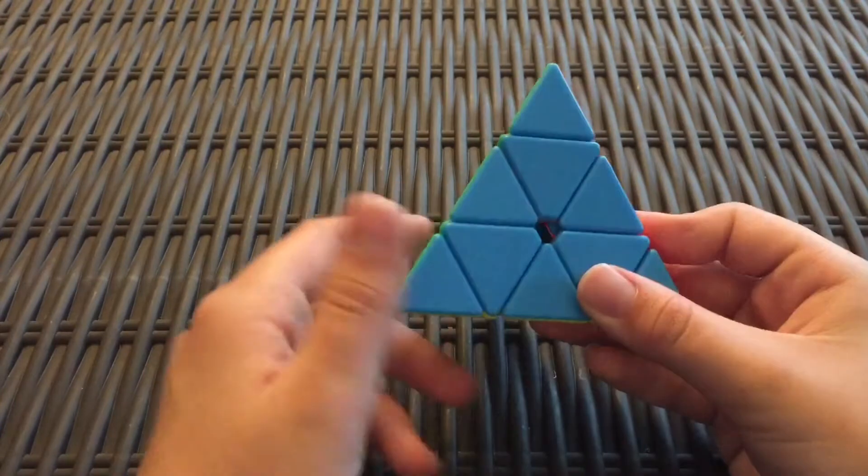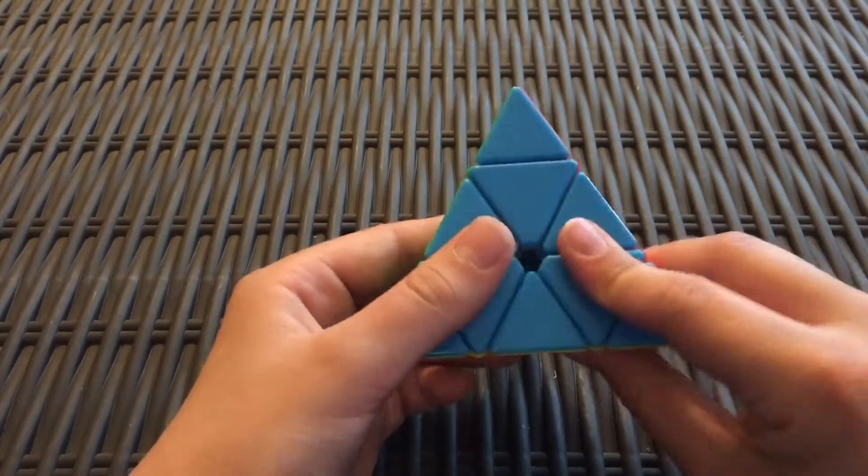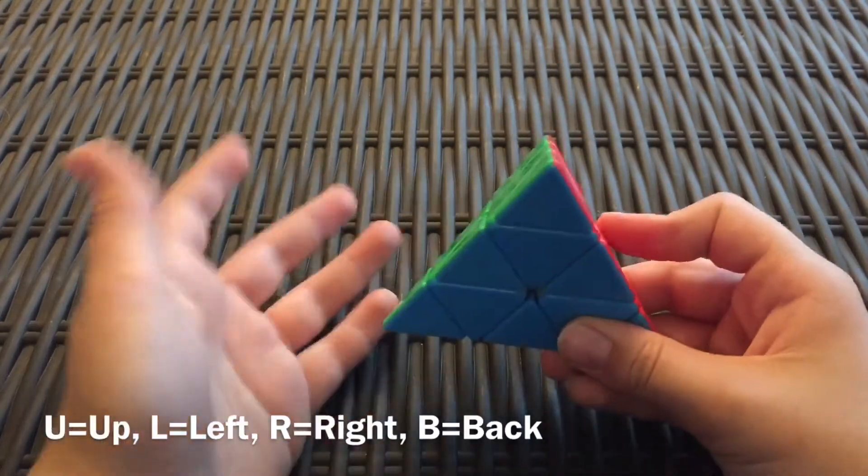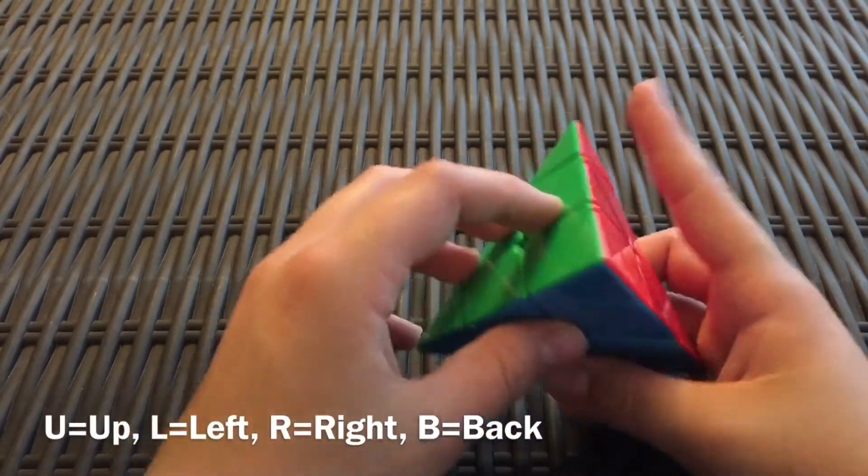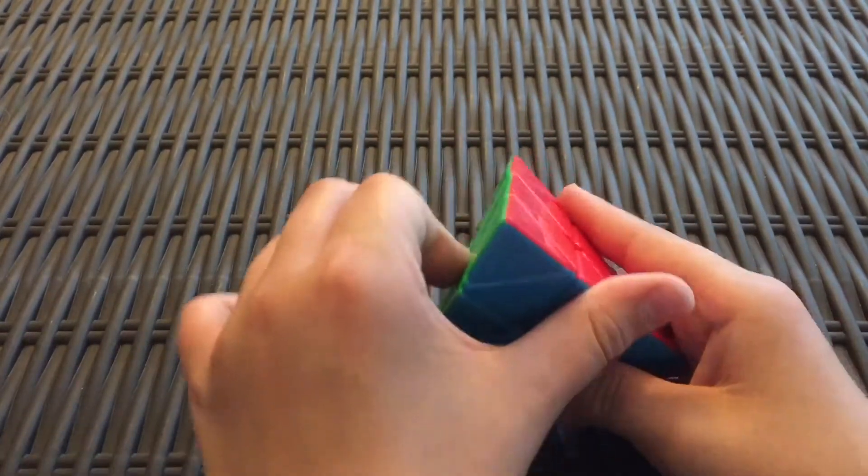There are four tips, or corners, whichever you want to call them. The first is U, and as in 3x3 or many other cubes, U will be clockwise and U prime.